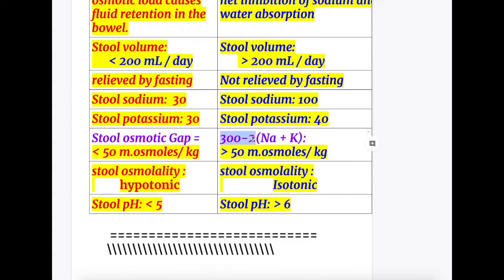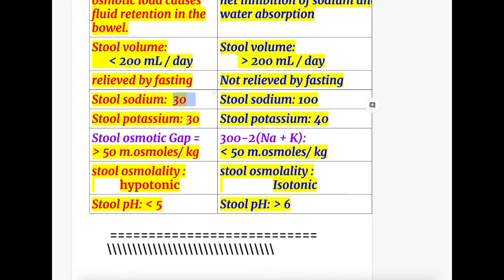The formula to calculate the osmotic gap in the stool is: 300 minus 2 times (sodium + potassium). Using the osmotic diarrhea figures — sodium 30 and potassium 30 — we get: 300 minus 2×(30+30) = 300 minus 120 = 180, which is more than 50 milliosmol.